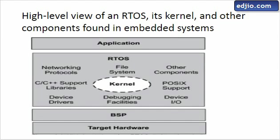An embedded system platform consists of hardware, BSP, RTOS, and application code. The target hardware can be an 8-bit, 16-bit, or 32-bit microcontroller with a few KB of internal memory, depending on your application. Nowadays, ARM-based architecture is quite popular. You can have SoCs from NXP, Qualcomm, Broadcom, or Texas Instruments.